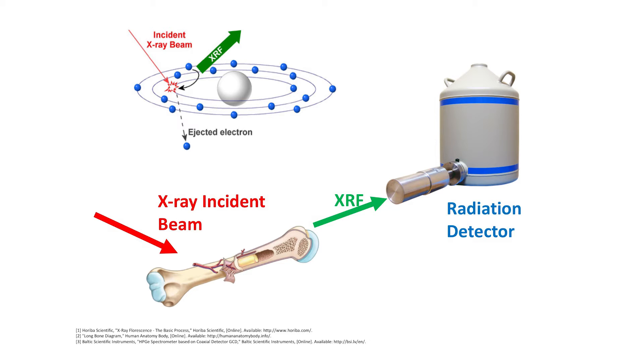The XRF system consists of three main components. First, we have a radioactive source, also known as the excitation source, which emits X-ray radiation constantly.